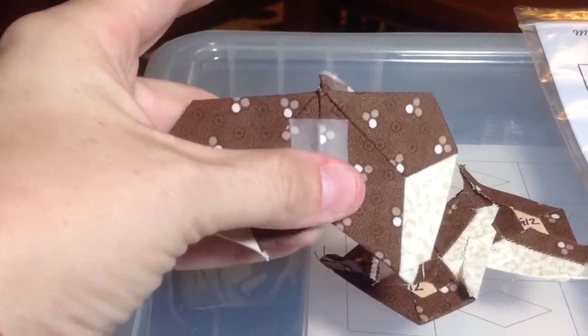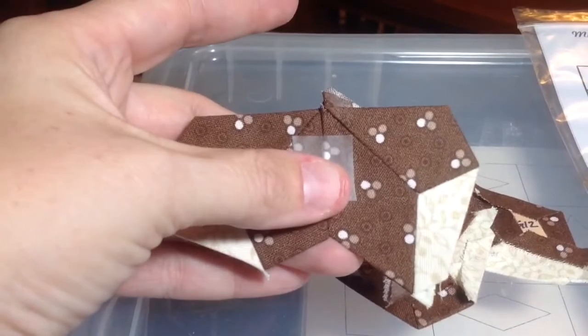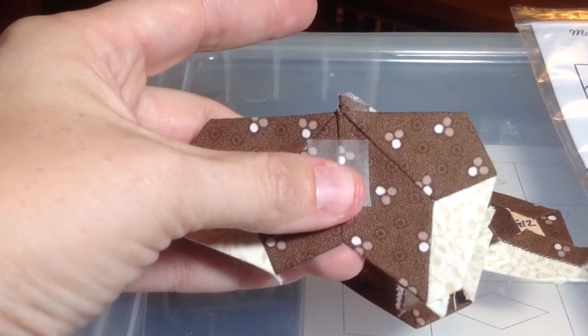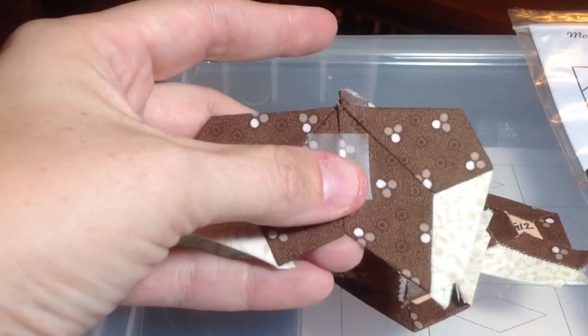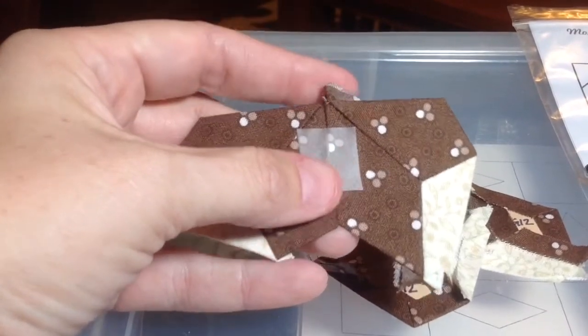But here, you see that the points don't quite match. A lot of that has to do with the fabric folding. And you can ease that in, when you stick on these other pieces.